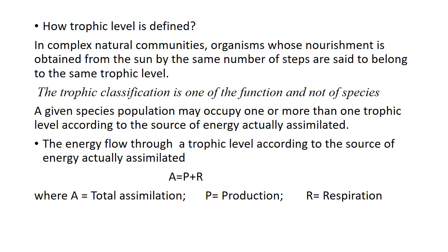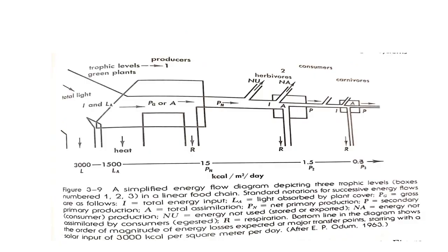The energy flow through a trophic level depends on the source of energy actually assimilated. The equation for assimilation leading to production is: total assimilation equals production plus respiration. Energy is wasted in respiration. This is a very simplified model of the energy flow diagram.